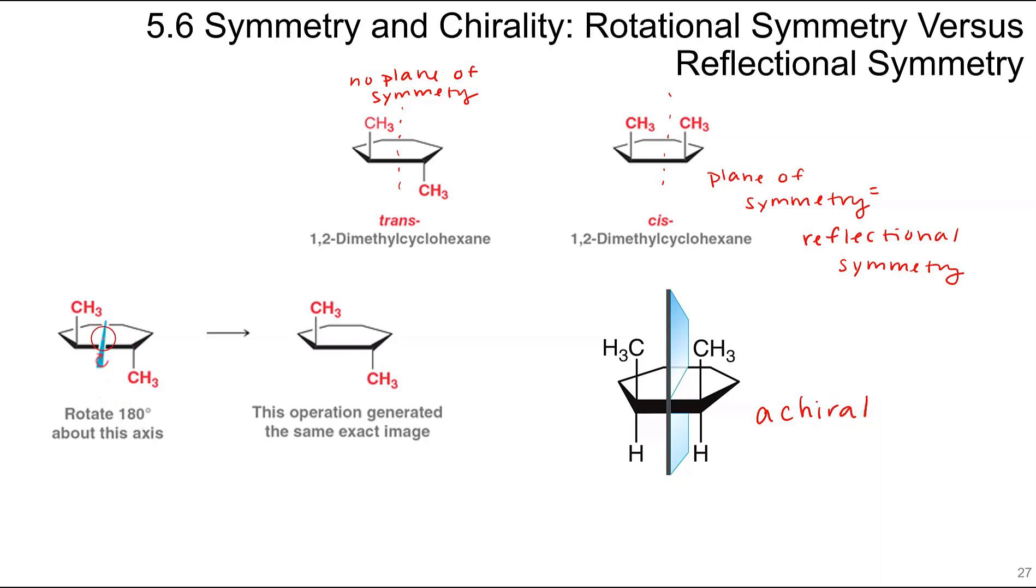If you look at this molecule here in the trans, if you had this line here and you folded the molecule over, this would stack upon itself. This one has rotational symmetry, and that is a chiral molecule. If it has a plane of symmetry within the molecule, it's achiral. If there's no plane of symmetry, then it is chiral.